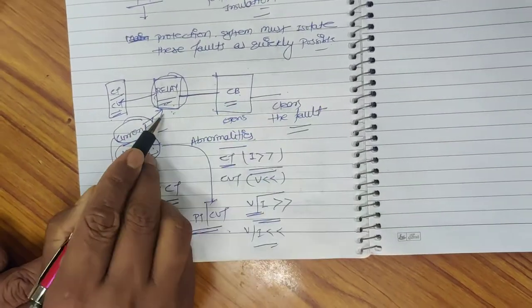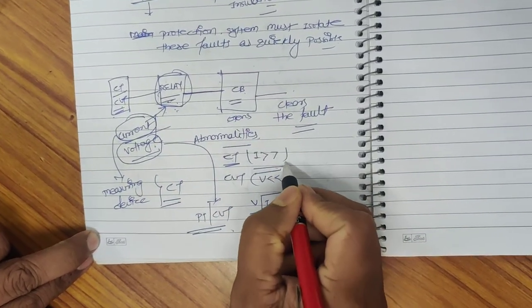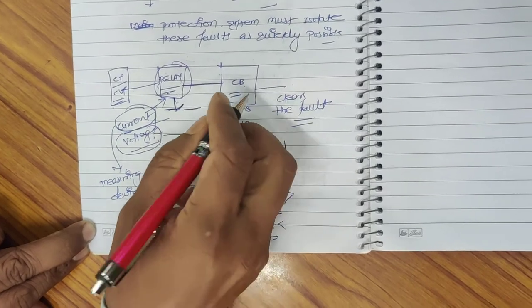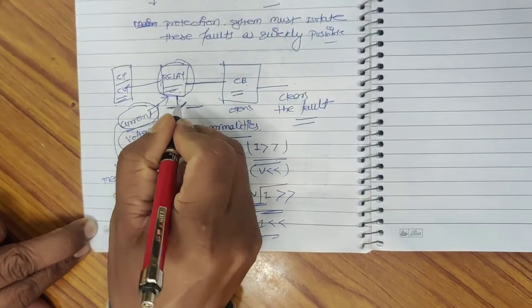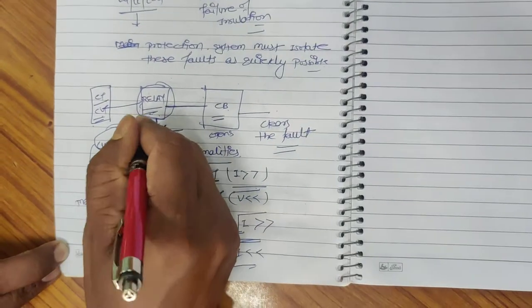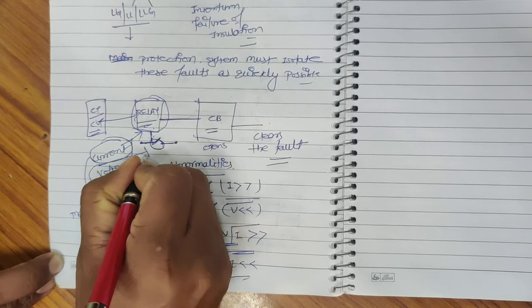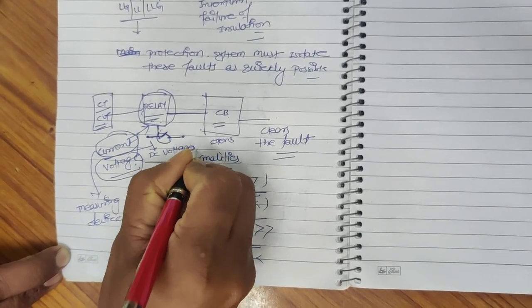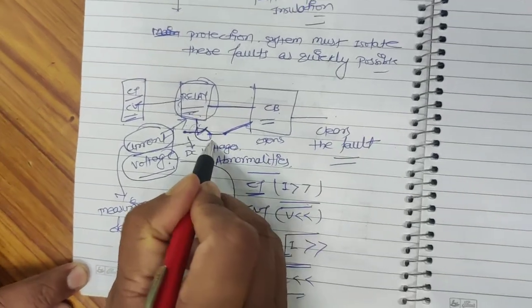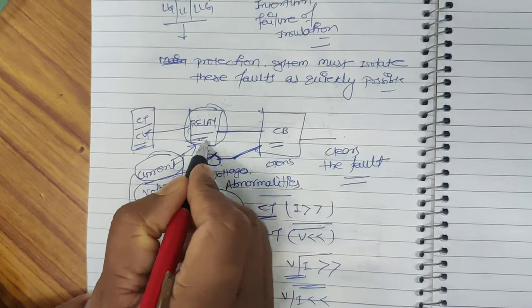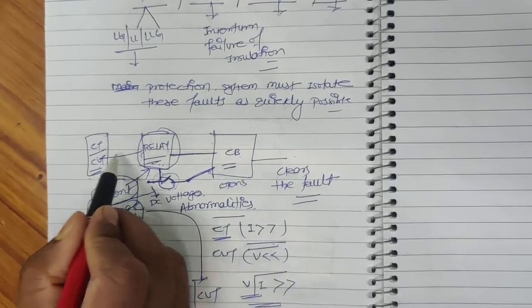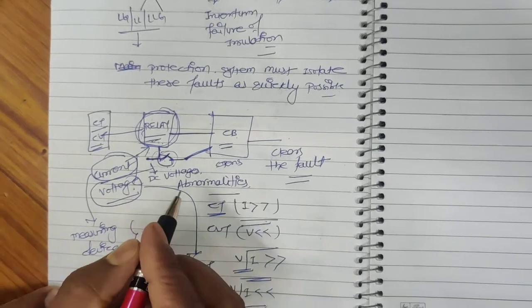After detecting a fault based on its algorithm, the relay has one output contact. This output contact is used to trigger the circuit breaker for clearing the fault. This output contact is basically a simple mechanical or electrical contact, wired from a DC voltage source and connected to the circuit breaker. Now, if this contact does not operate — even if the relay detects the fault correctly — the fault will not be cleared. Similarly, if the relay itself fails to operate, the fault will not be cleared. So there are chances that failure of even a single element will lead to non-clearance of the fault.